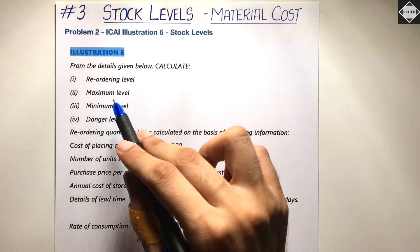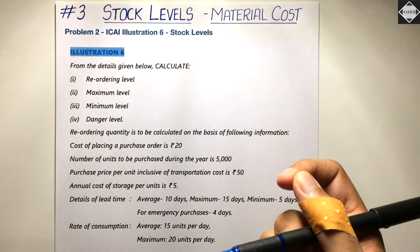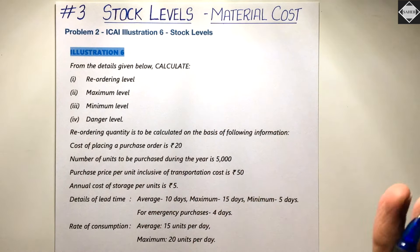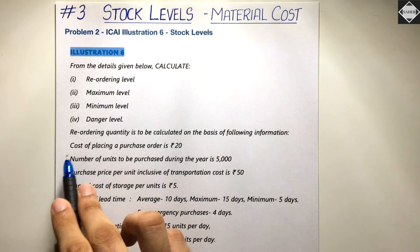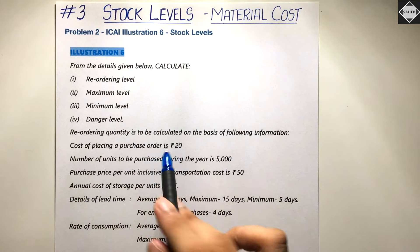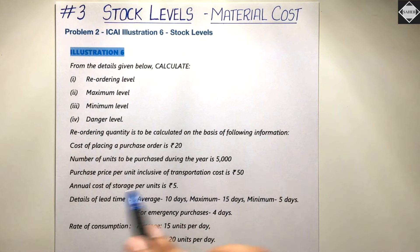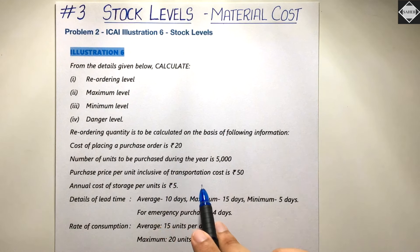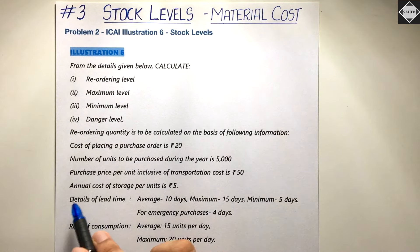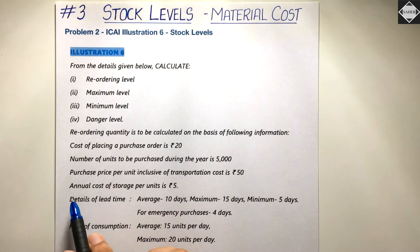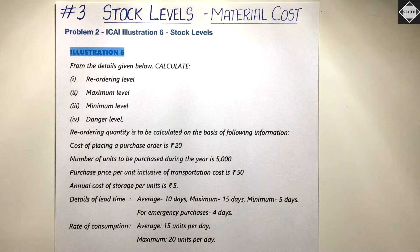While calculating reordering level and maximum level we need ROQ — reordering quantity — which is not directly given; we'll have to calculate it. The details given are: cost of placing a purchase order is ₹20 (ordering cost per order); number of units to be purchased during the year is 5,000 (annual demand); purchase price per unit inclusive of transportation cost is ₹50. We don't need the purchase price because they have directly given the carrying cost — annual cost of storage per unit is ₹5.